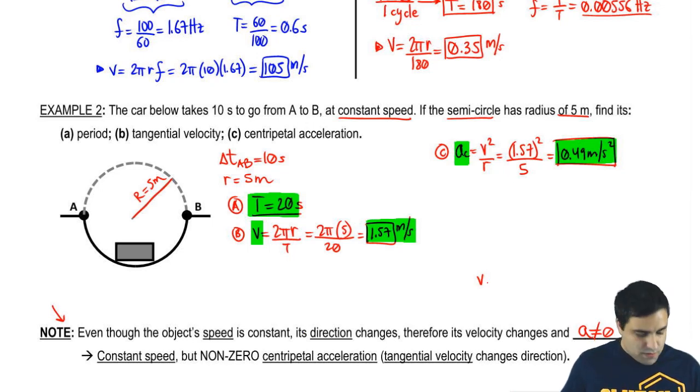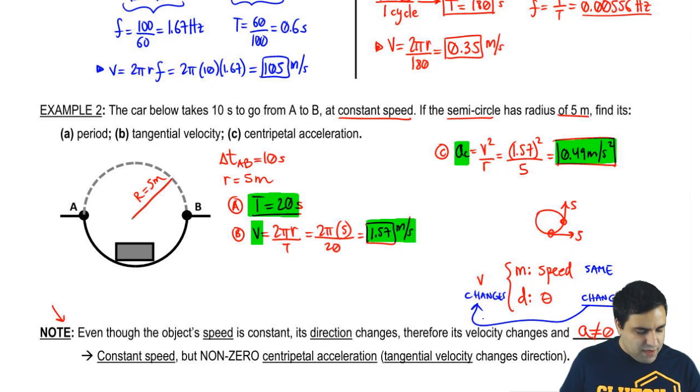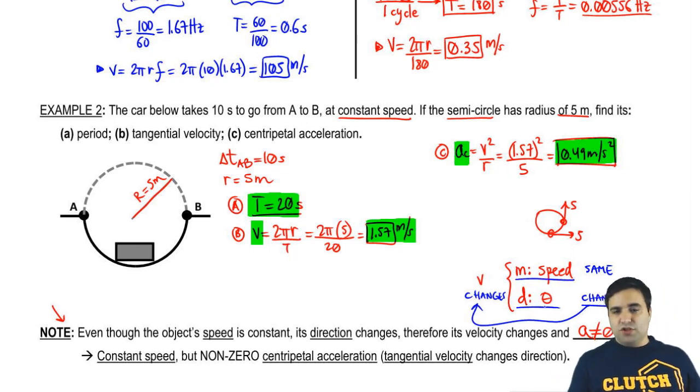Velocity is a vector. So, as a vector, it's made up of two things. It has a magnitude, which is speed. And it has a direction, which is usually given by your theta. So, here's the thing. If you go around a circle with constant speed, it means that this is a 5 here. This is a 5 here, etc. So, your speed stays the same, but your direction changes. And because your direction changes, your V changes as well. If either one of the parts that make up a vector change, then the vector itself changes. That's what happens here. Because direction changes, velocity changes.